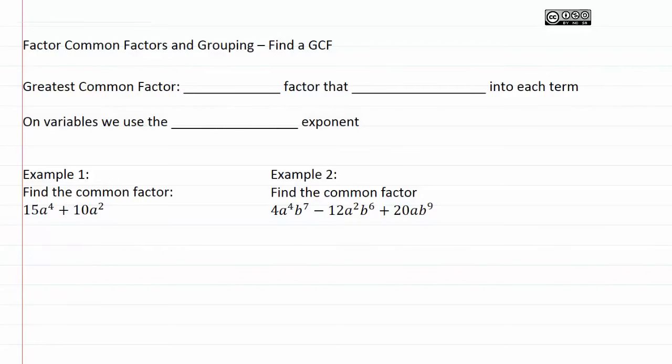Factor common factors and grouping. Find a GCF. GCF stands for greatest common factor. And when we're dealing with polynomials, our greatest common factor is going to be the largest factor that divides into each term.